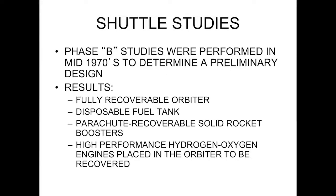The Phase B studies were performed in the mid-1970s to determine the preliminary design. The results showed a fully recoverable orbiter, a disposable fuel tank, parachute-recoverable solid rocket boosters, and high-performance hydrogen-oxygen engines placed in the orbiter to be recovered. This was all systems engineering that led up to the design. Usually systems engineering comprises an interdisciplinary team given some assumptions and constraints, some top-level requirements. They do an iterative process with tools such as computer tools for calculation of loads and flight mechanics, and come up with an iteration of what the design is going to be.